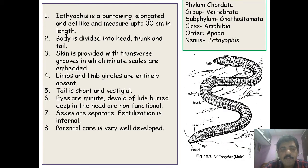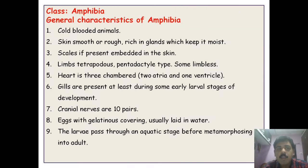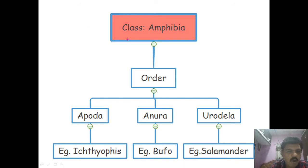The first example from Amphibia is Ichthyophis. Its classification: Phylum Chordata, Group Vertebrata, Subphylum Gnathostomata, Class Amphibia, Order Apoda. Before discussing that, the Class Amphibia is divided into three orders: Apoda, Anura, and Urodela.